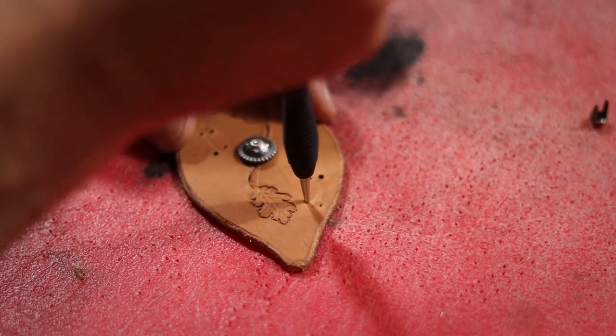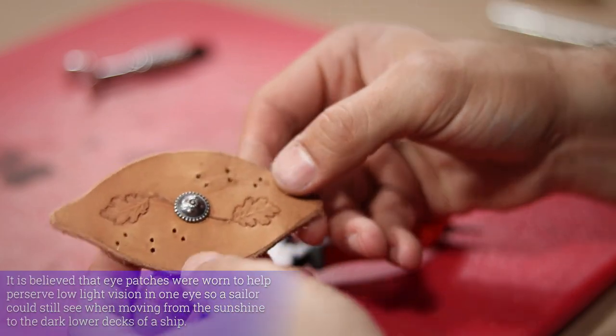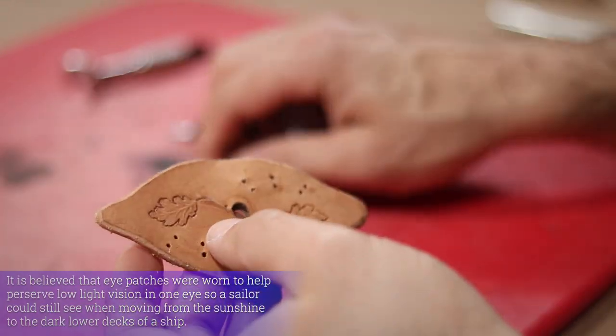Then I use an awl to punch small holes on these marks through the leather. With that all figured out, I remove the cabochon and prepare to shape the eyepatch.